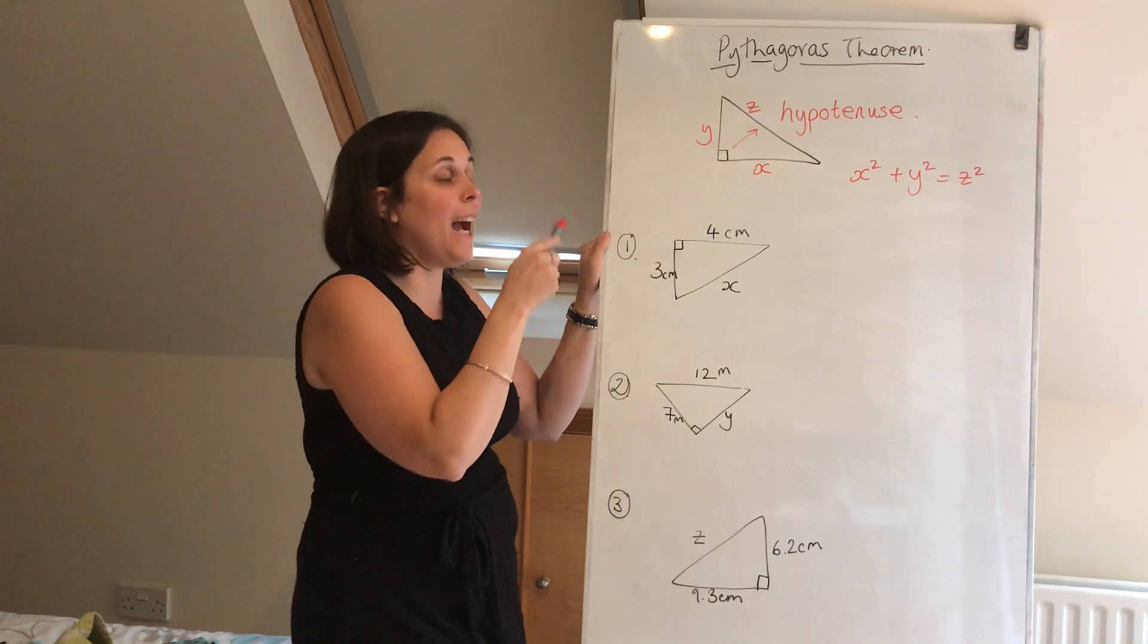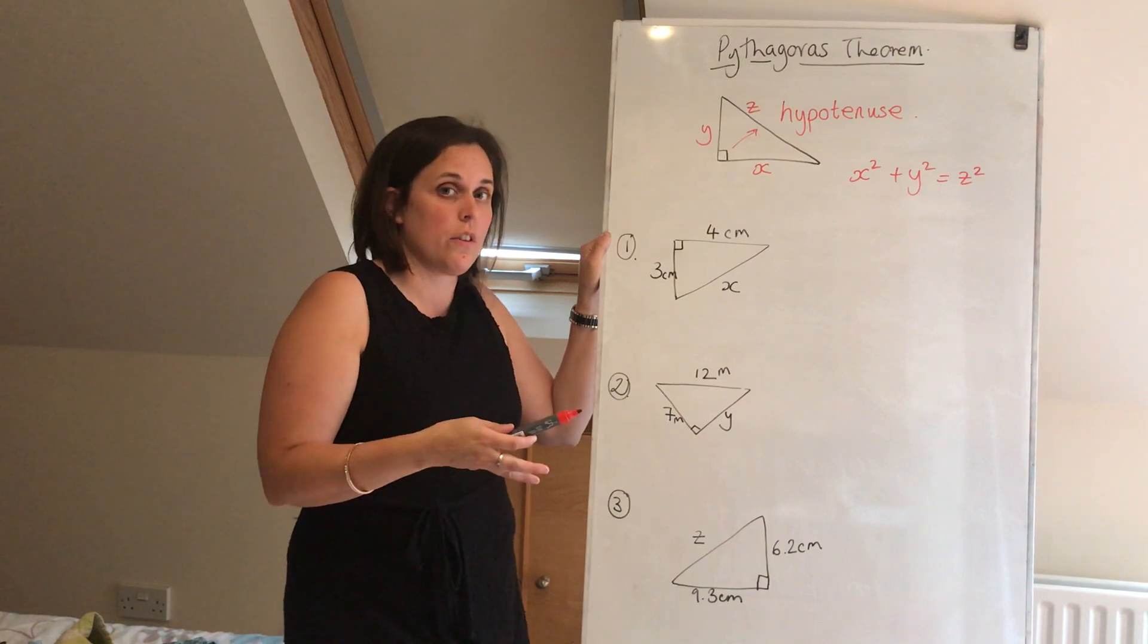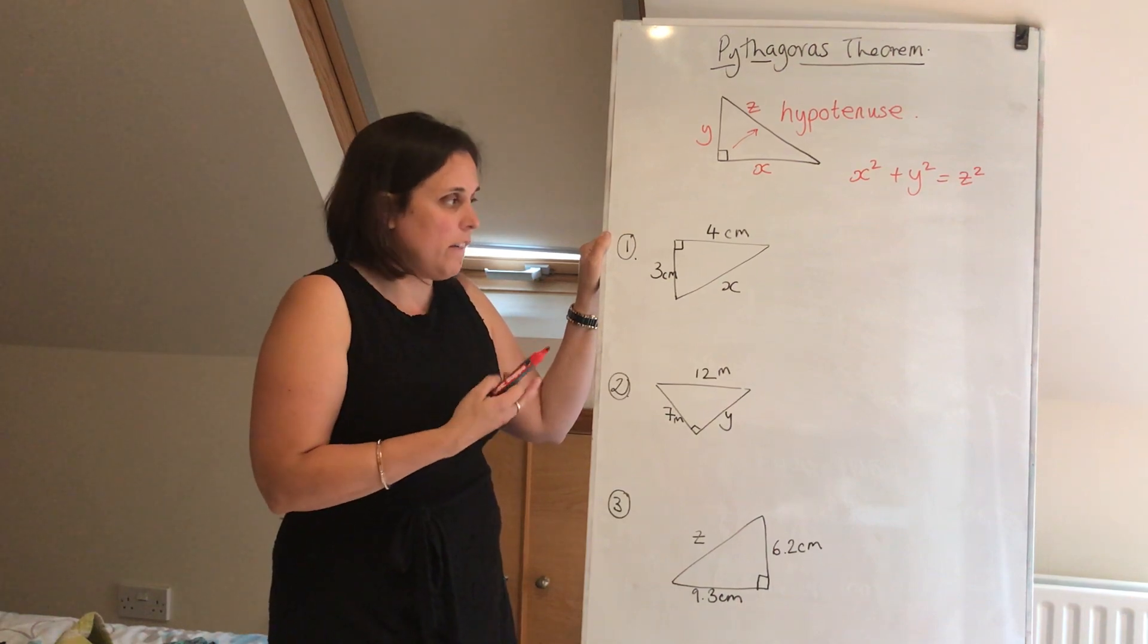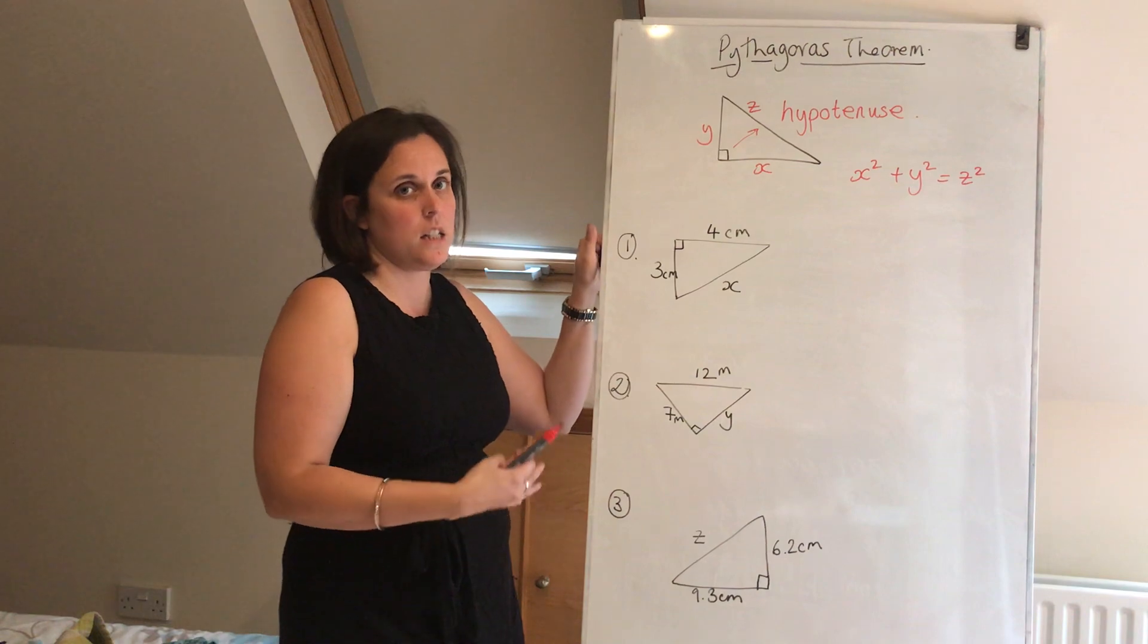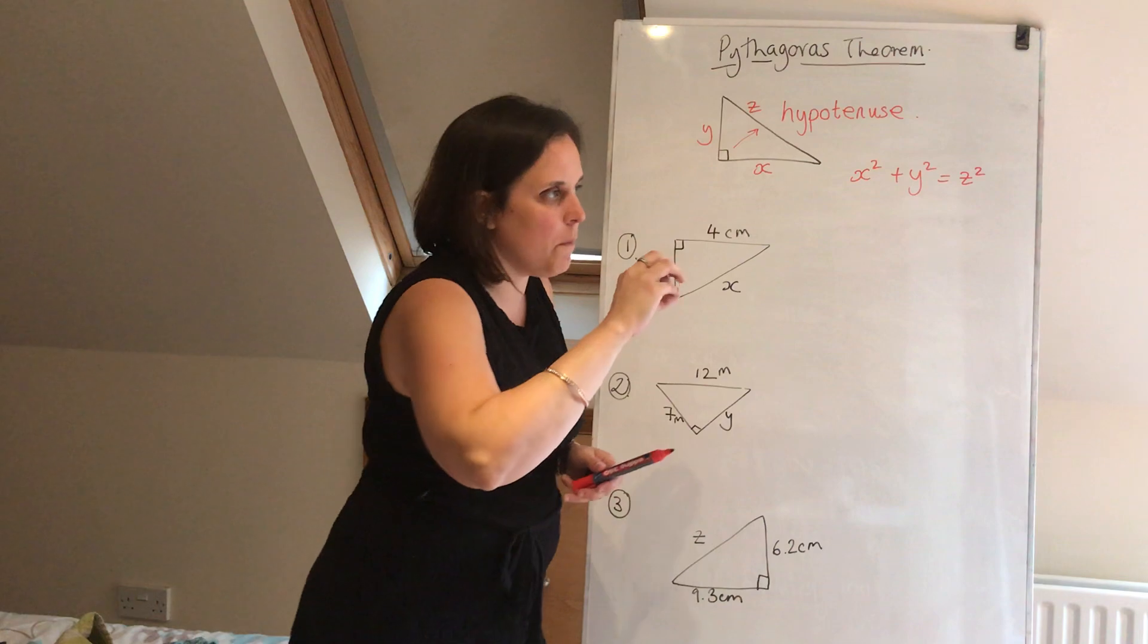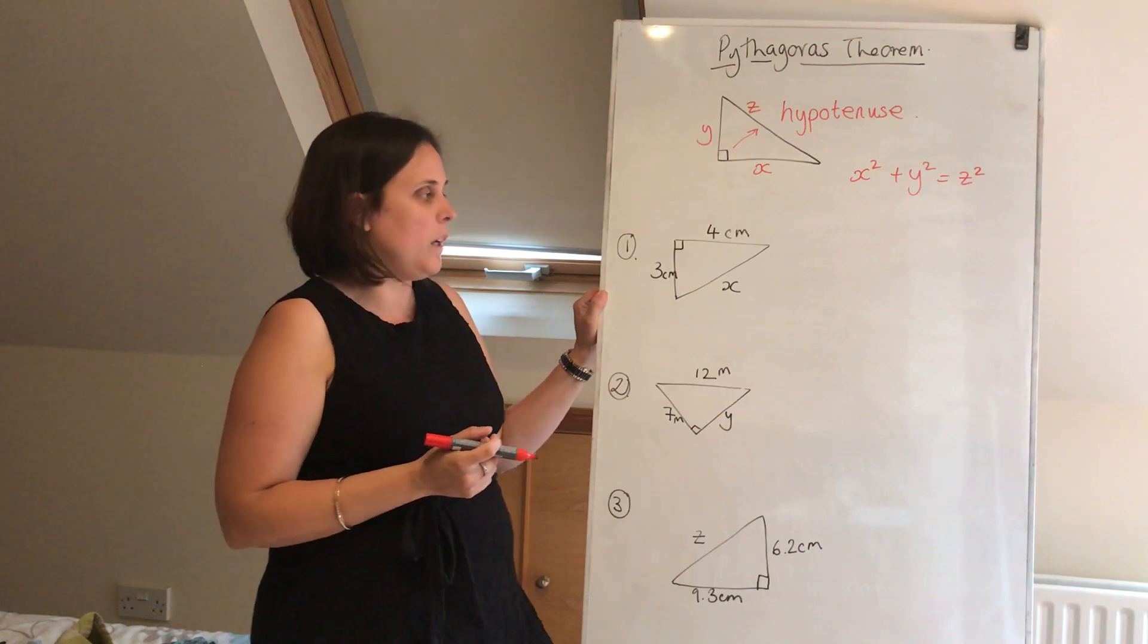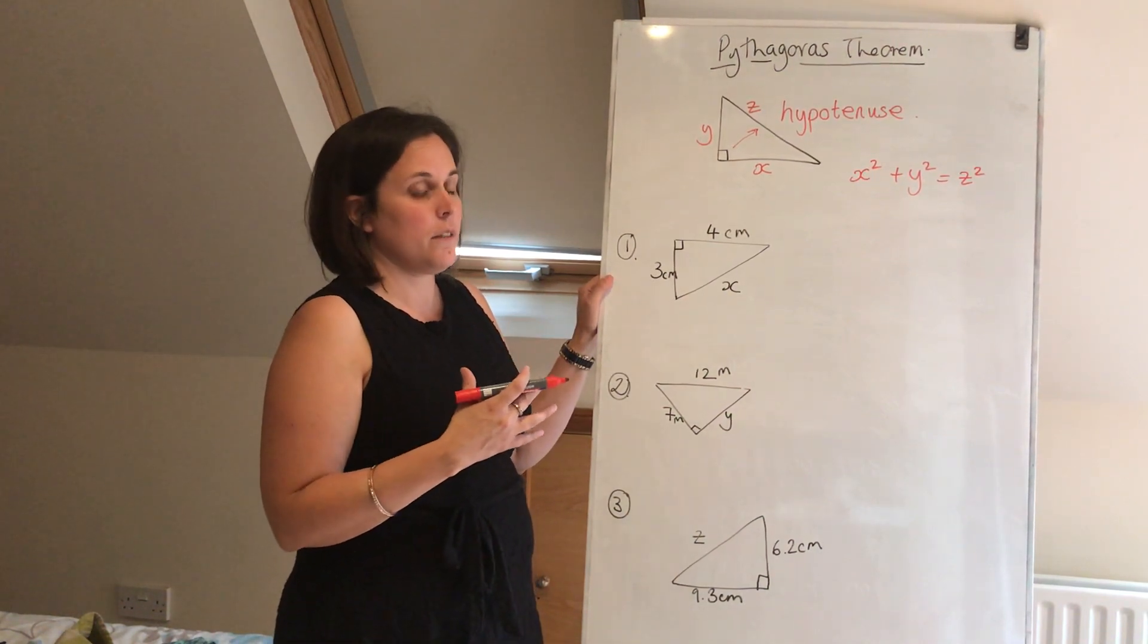Now you might think, how does that help us? Well, it helps us quite a lot because if we have two sides of a right angled triangle and we want to know the length of the third one, then we can work that out. So I'm going to go through three examples here. They're very similar and just keep it nice and basic.